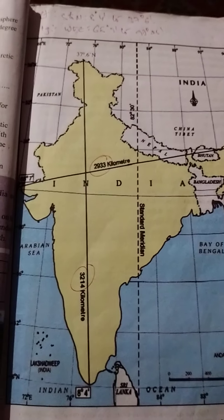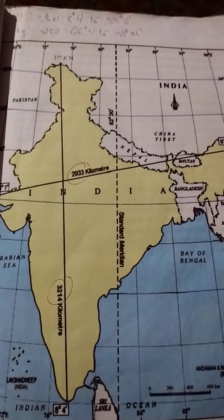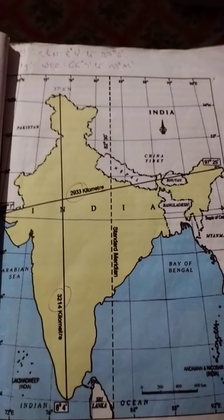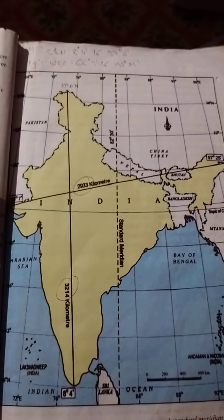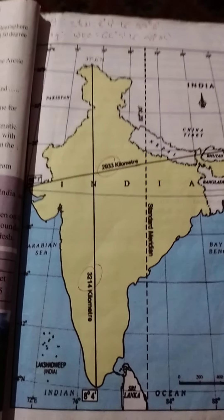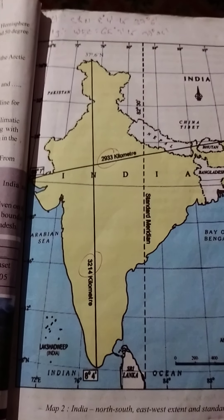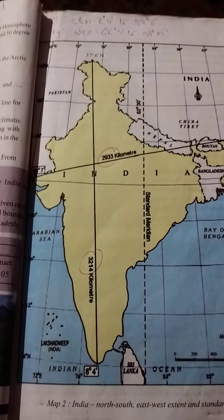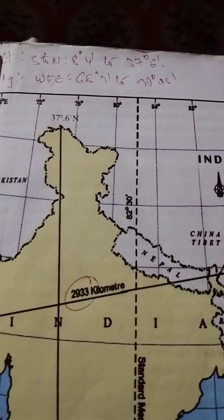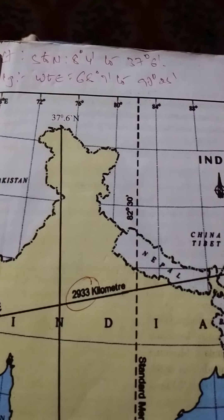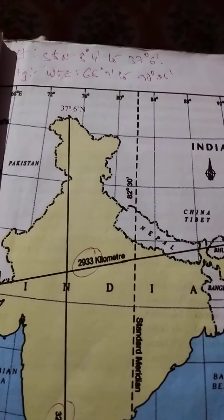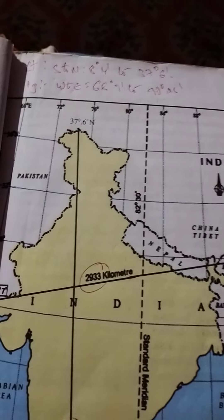See in this world map where India is located — north side. Regarding latitude, from south to north, India's latitudes start from 8 degrees 4 minutes to 37 degrees 6 minutes.